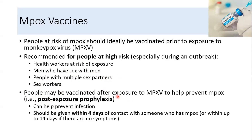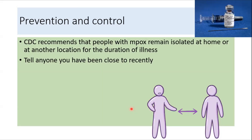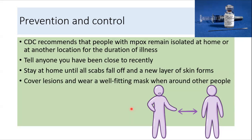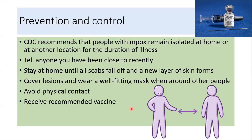The Mpox vaccine can also be used as post-exposure prophylaxis. For this purpose, it should be given within four days of contact with someone who has Mpox, or within up to 14 days if there are no symptoms. To prevent and control the disease, patients should remain isolated at home until all scabs fall off and a new layer of skin forms. They should cover their lesions, wear a well-fitting mask when around others, avoid physical contact as much as possible, and receive the recommended vaccine, especially during outbreaks.